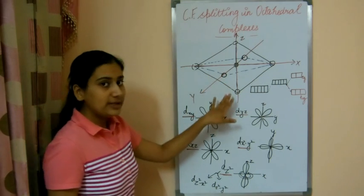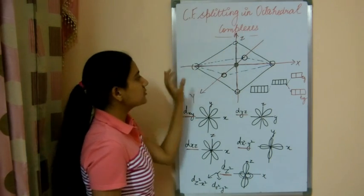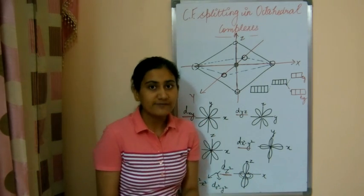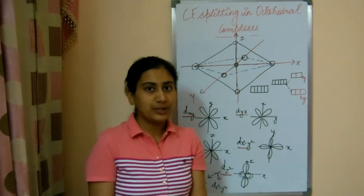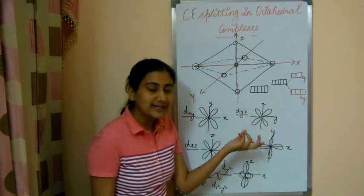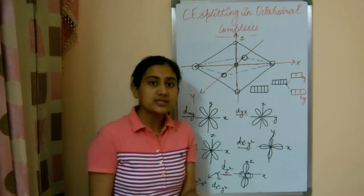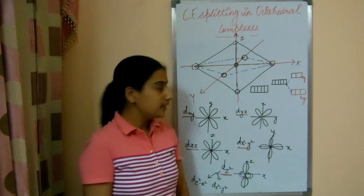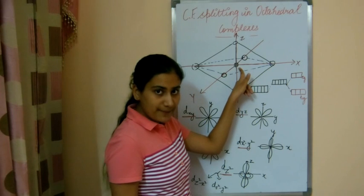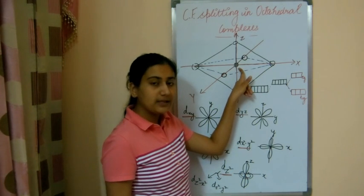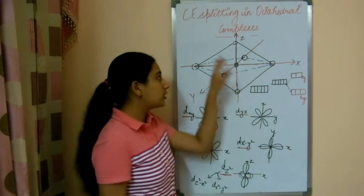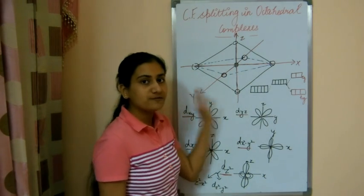These ligands put their field on the metal atom, as explained in the previous video. This effect is seen in the valence orbital of the metal atom — that means the d orbital — because it is a transition metal atom, and the valence orbital is the d orbital. So the d orbitals get affected because of the field of these ligands.